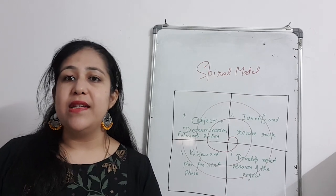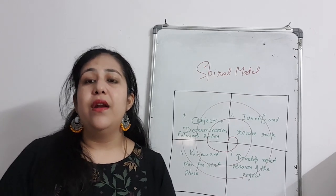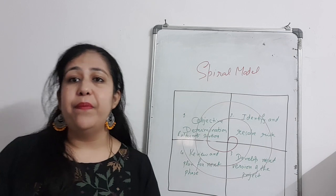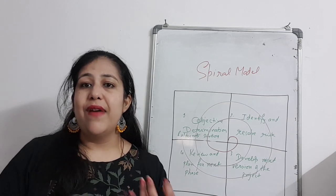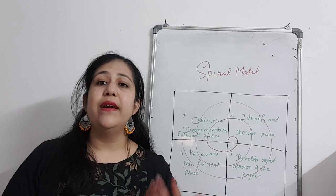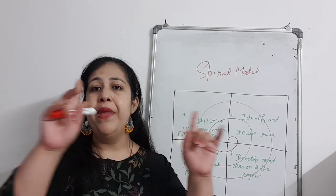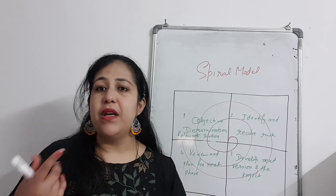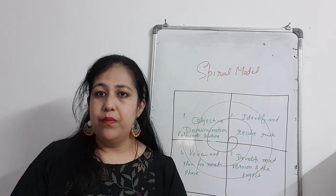There are many phases like identifying the requirement, designing and implementing it, then testing it, validation and verification, and finally implementation and maintenance. We divide all these phases into 4 quadrants and keep repeating until we reach the final product.